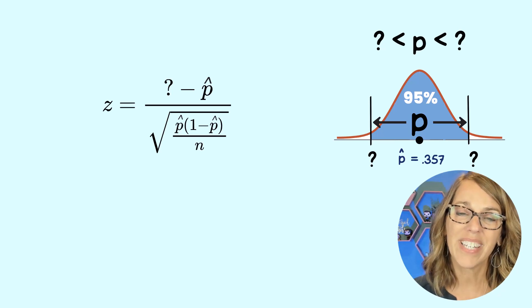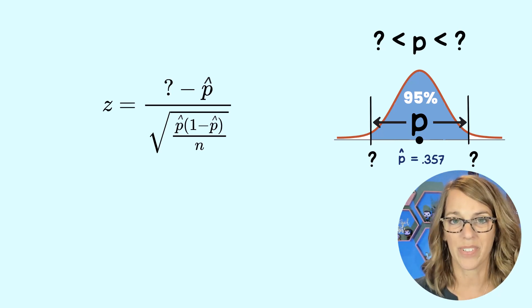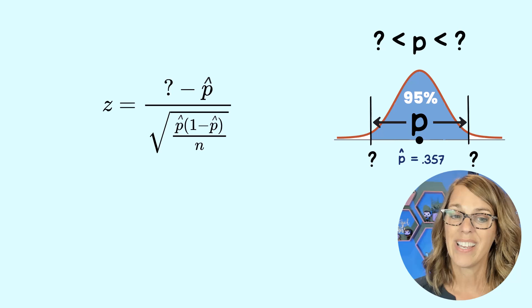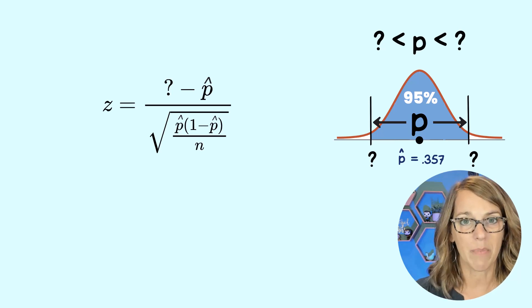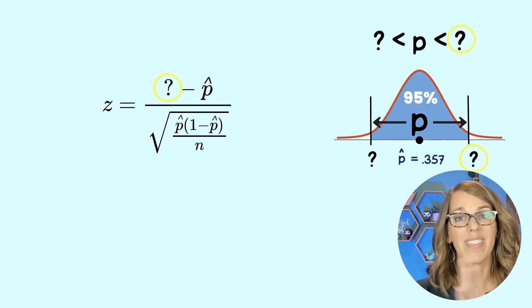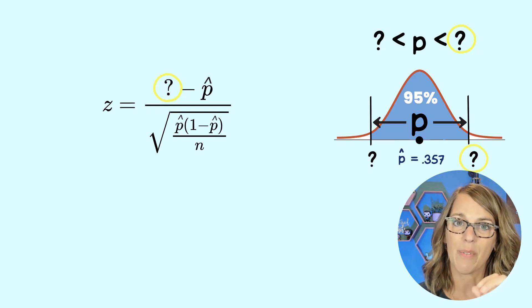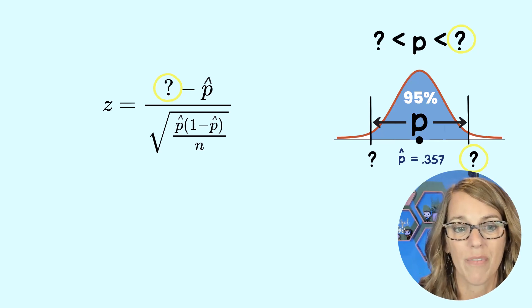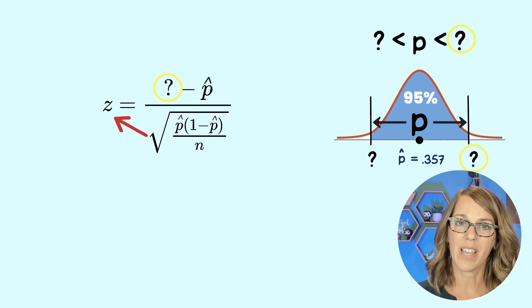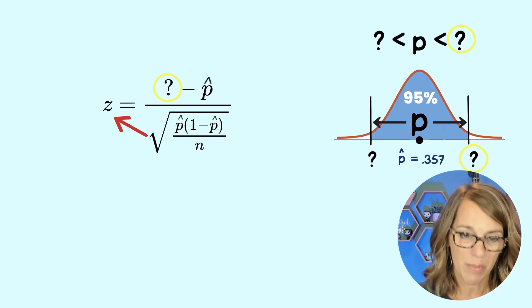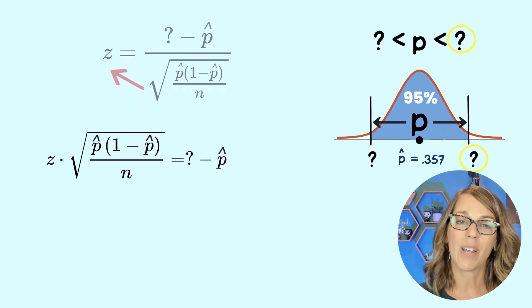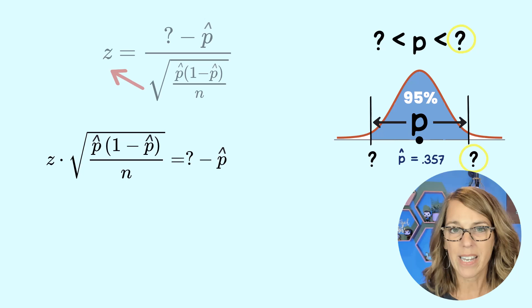Now I've got my formula, but I really don't want Z equals. I'm not solving for Z. I'm solving for one of those limits. We're going to start with the upper limit. In the formula, I want to get the question mark all by itself. So I want to cross multiply by that denominator. I'm going to move this up out of the way and we end up with Z times the square root quantity is equal to question mark the upper limit minus P hat.